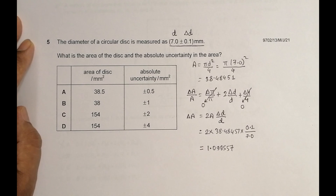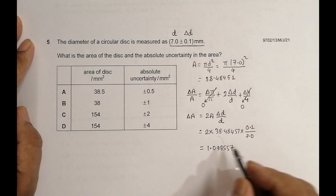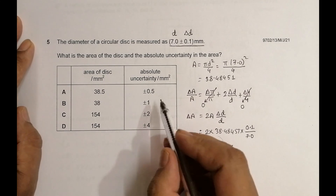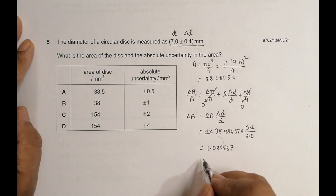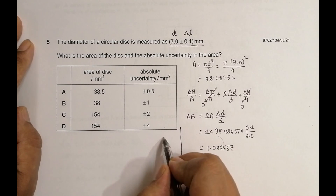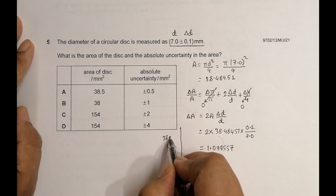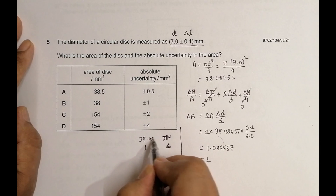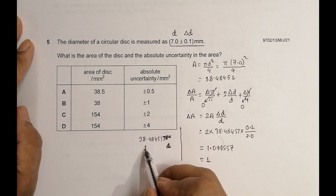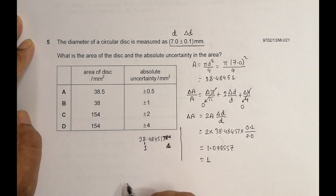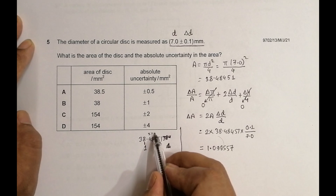Now the rule is that the uncertainty should be expressed as either 1 or 2 significant figures. Here, taking 1 SF, the uncertainty rounds to 1. The uncertainty is 1. Now, since the uncertainty is 1 — which is one place in front of the decimal — for the area value 38.48451, I can only write up to the units place. I should not write the digits after the decimal. Looking at those digits for rounding: they are less than half, so the 8 is maintained.